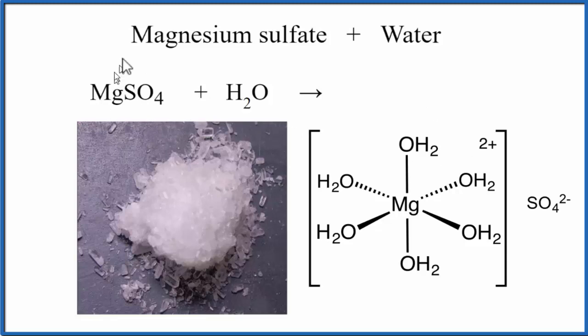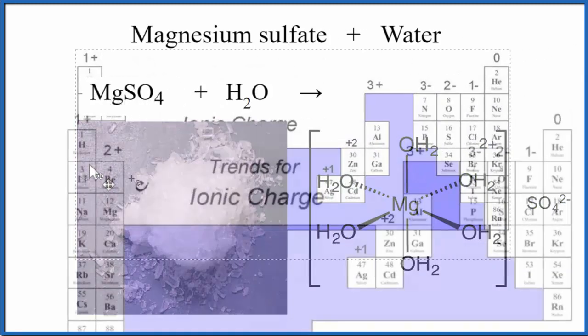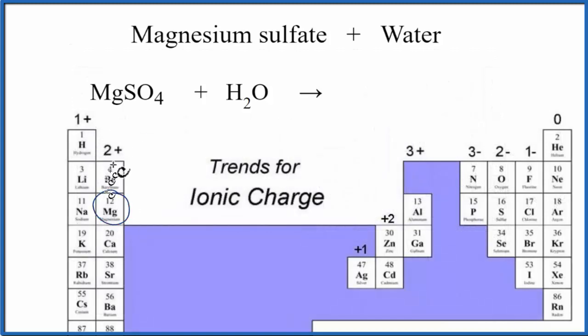To do that, we need to know the charge on Mg. We can go to the periodic table and see that magnesium is in group two, so it'll have a two-plus ionic charge.